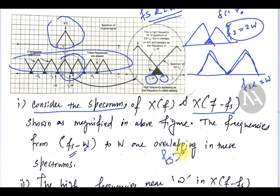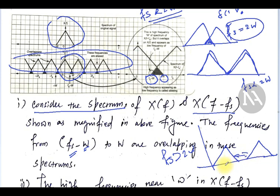Suppose Fs is greater than 2W — how will the spectrum look? The spectra will be very clearly defined. There is no touching of the edges of the spectra, and there is a proper gap between the two spectra. So you will not have any problem representing or recovering the signal from its samples. If Fs is greater than 2W, that is well and good. At minimum, the condition Fs equal to 2W must be satisfied, so there is no overlap.